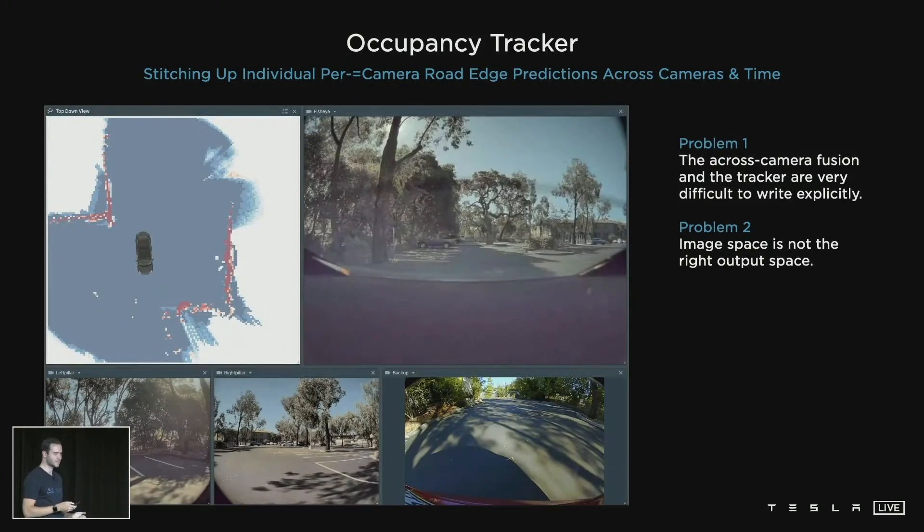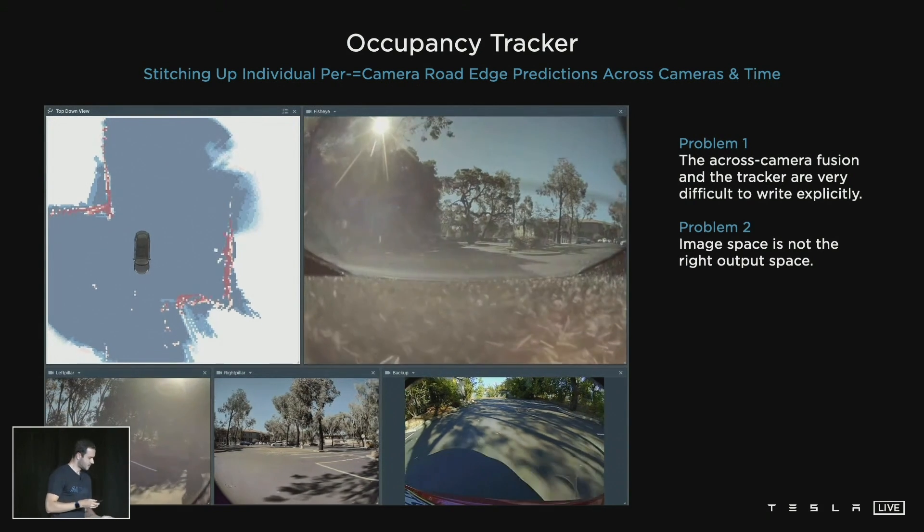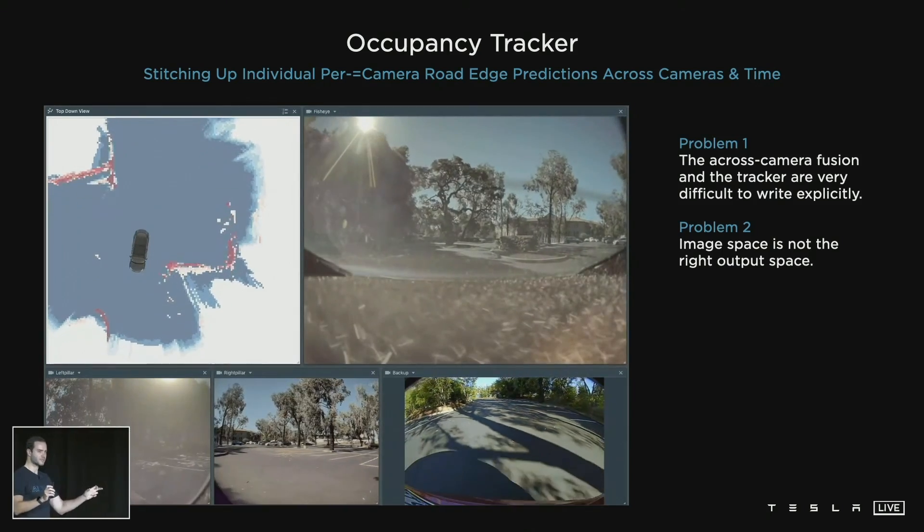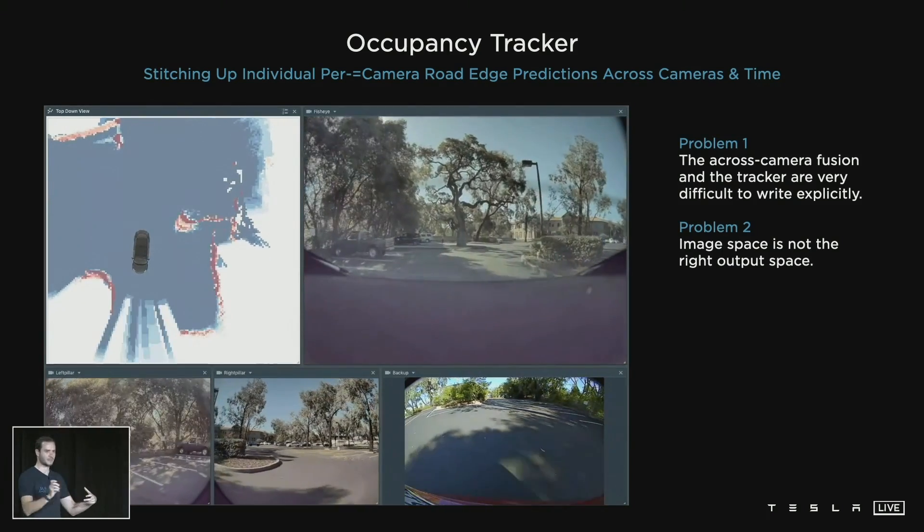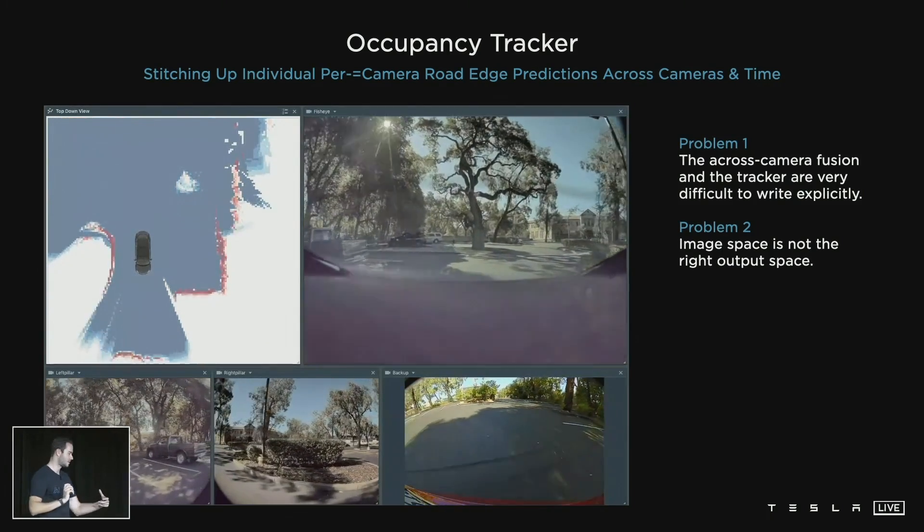We attempted to do this using C++ and developed what we call the occupancy tracker at the time. Here we see that the curb detections from the images are being stitched up across camera seams, camera boundaries, and over time.